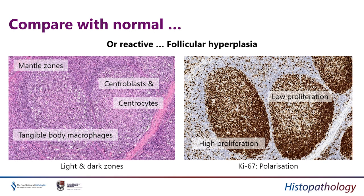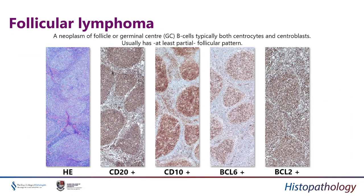With immunohistochemistry in reactive follicles, there's zonation — a low-proliferation area and high-proliferation area — called polarization, a sign that this is a secondary reactive follicle. I didn't see this in the GP case. I think what I've seen is neoplastic: the follicles are variable in size, back to back, and don't respect each other. I have to prove that — so these are my follicles, CD20-positive, confirming a B-cell neoplasm. More markers: CD10 as a germinal center marker, BCL6 as another germinal center marker, and BCL2 which differentiates neoplastic from reactive — in a normal reactive follicle BCL2 should be negative, but here it's positive, proving this is a follicular neoplasm.